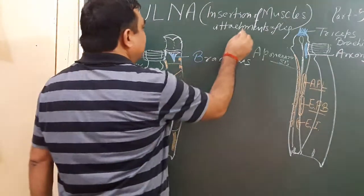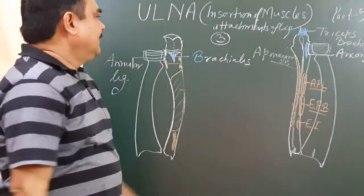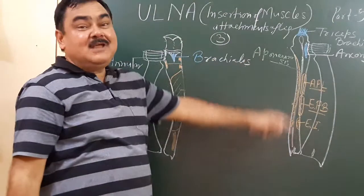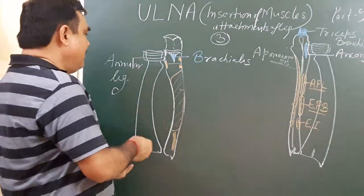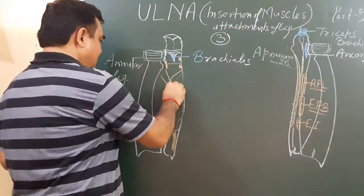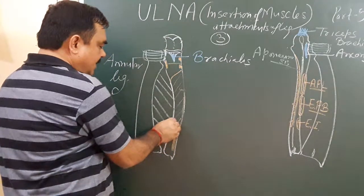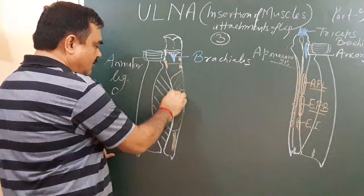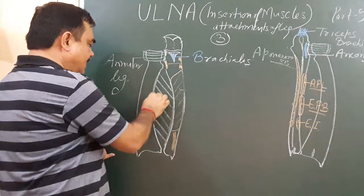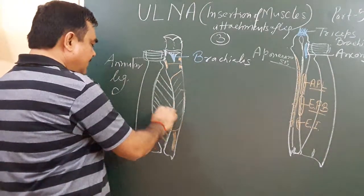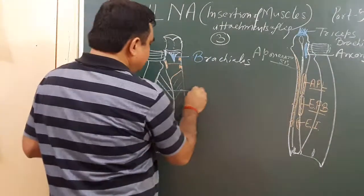So there is insertion of three muscles. And another three are attachments of ligaments or membranes. Here is one membrane attached. This is the interosseous membrane, which is attached with the interosseous border. The interosseous border runs up the ulna, and here is the interosseous border of the radius. Between these two borders there is a membrane known as the interosseous membrane.